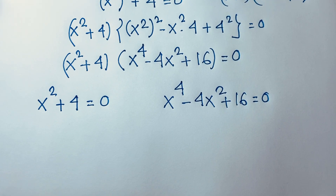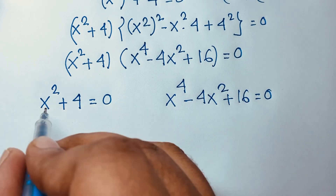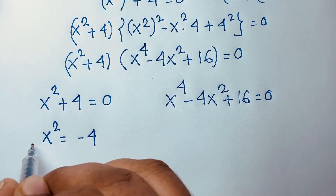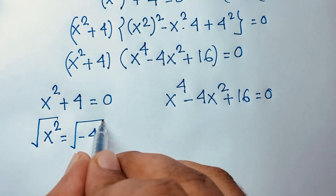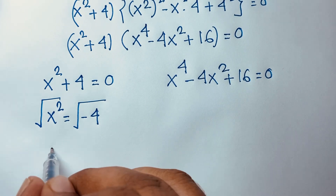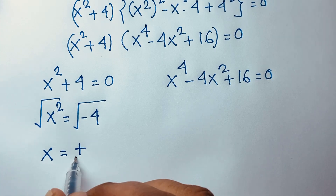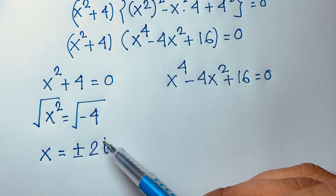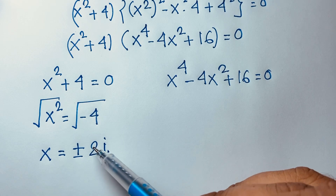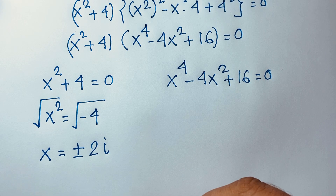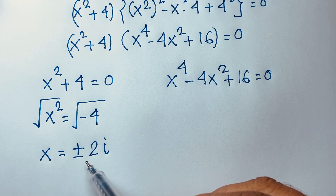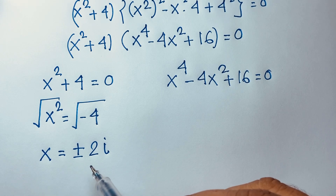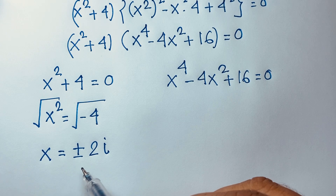We will find 6 roots total. From the first equation, x squared plus 4 equals 0, so x squared equals negative 4. Taking the square root of both sides, x equals plus or minus 2i — because the square root of negative 1 is i, and the square root of 4 is 2.